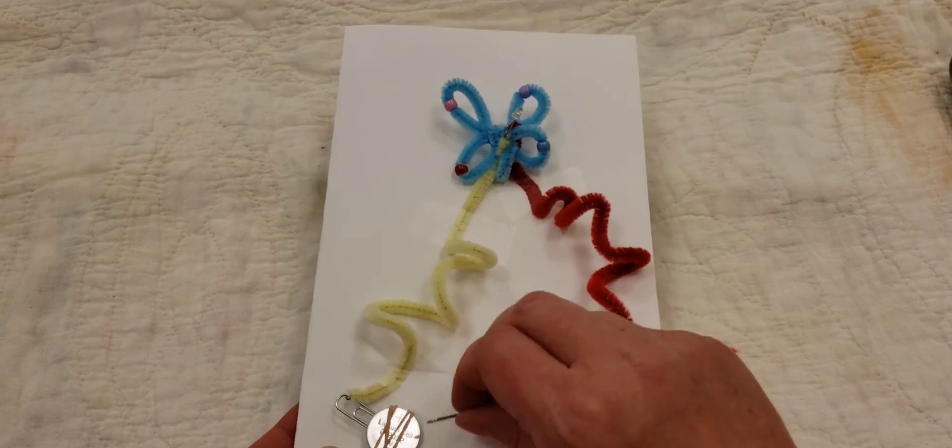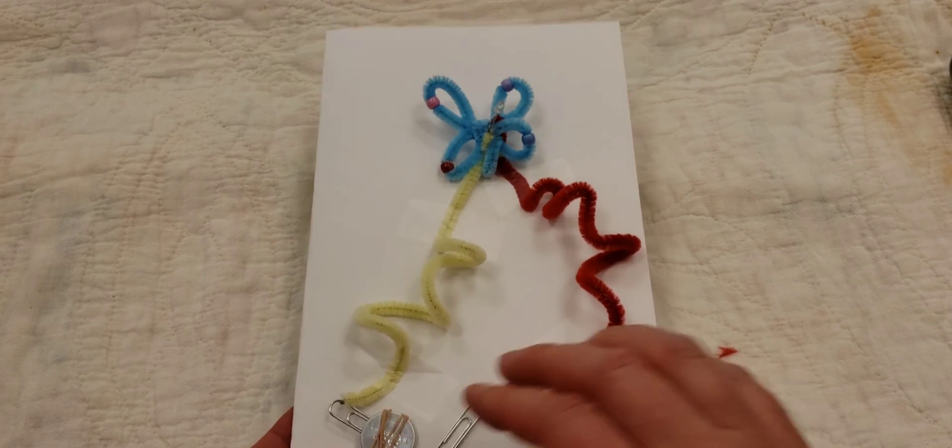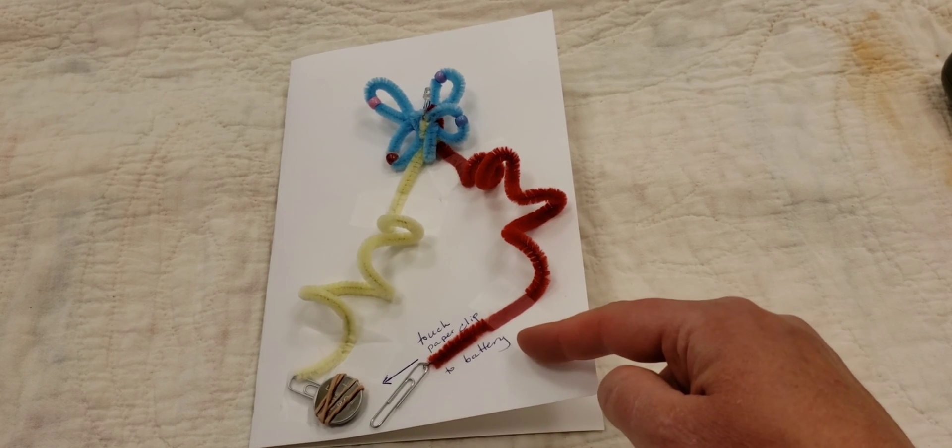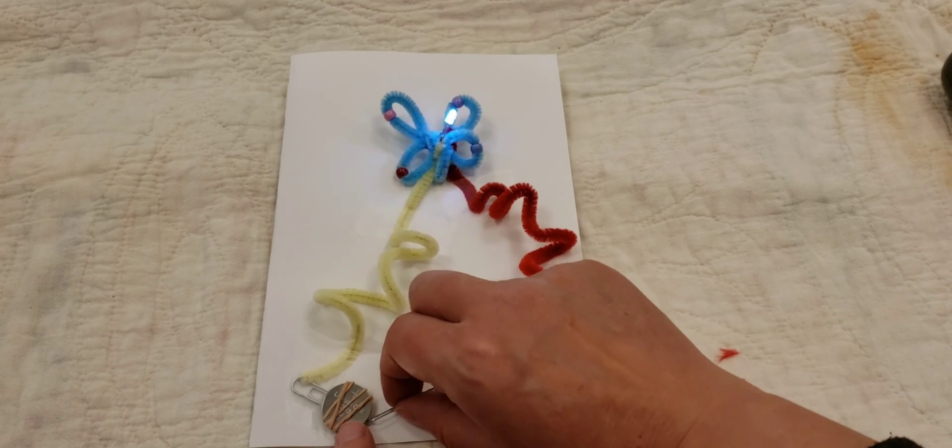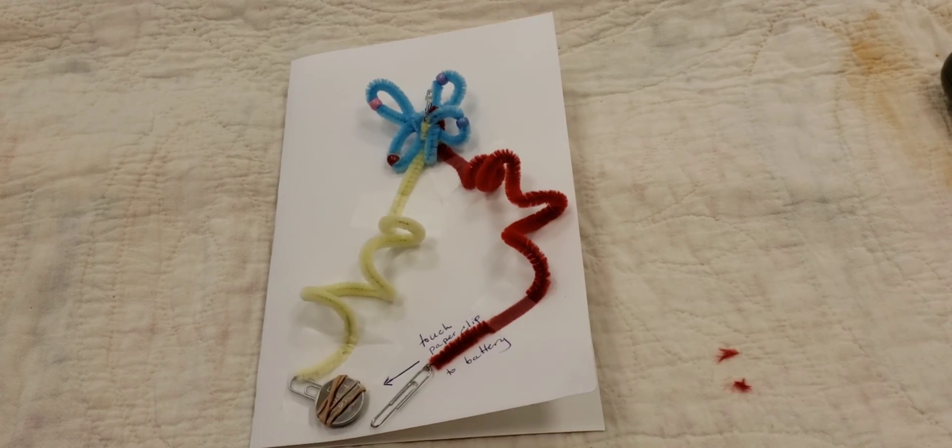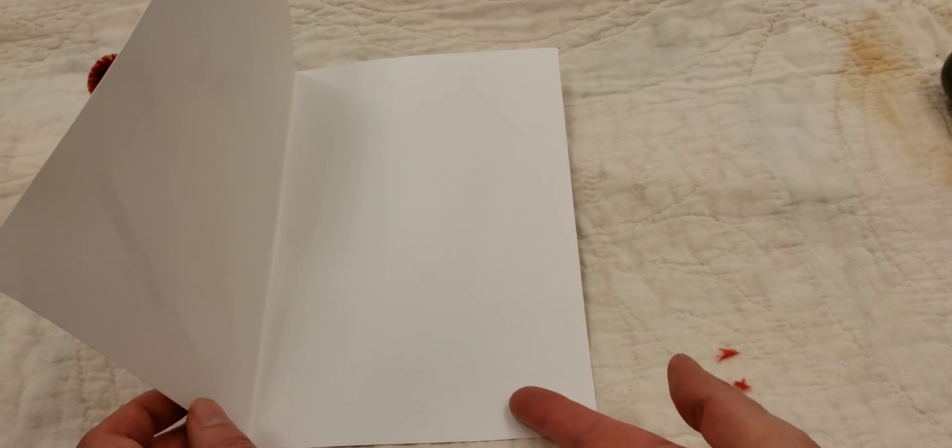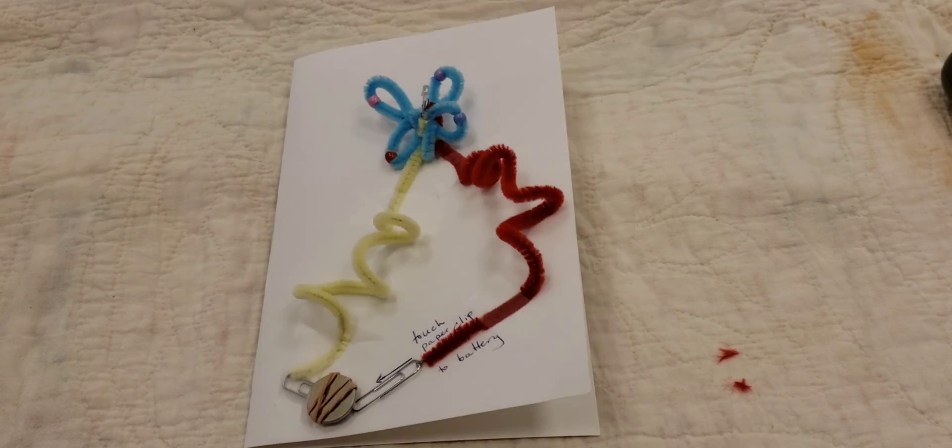And then when you touch it there, it lights up. If you want to, you can add some directions to your card, like touch paperclip to battery, so that it's a little bit easier for whoever gets the card to know what they're supposed to do. And you can add all sorts of more decorations and you can say what you want to say on the inside. But that is your basic project.